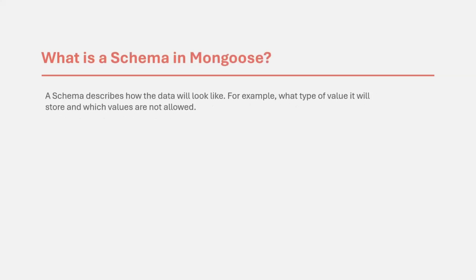A schema describes how the data will look like — for example, what type of value that data is going to store and what values are not allowed for that data. Let's understand it practically.